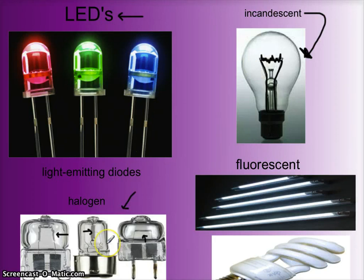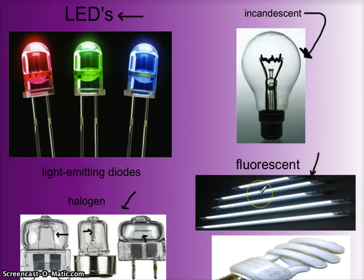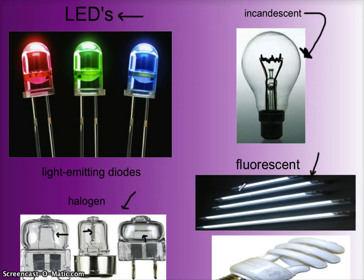Halogen bulbs are made of quartz and have a halogen gas mixture inside them — that's where the 'halogen' name comes from, rather than ordinary air like in regular light bulbs. That brings us to fluorescent light bulbs, which you've probably seen — they're likely in your classrooms right now. These fluorescent bulbs are filled with mercury vapor and some other gases, and they give off UV light when an electric current is passed through them.